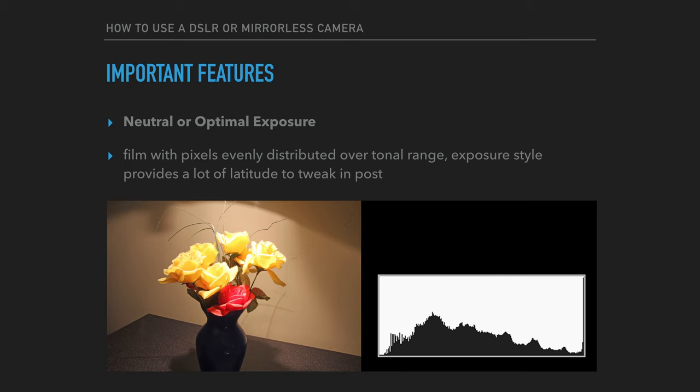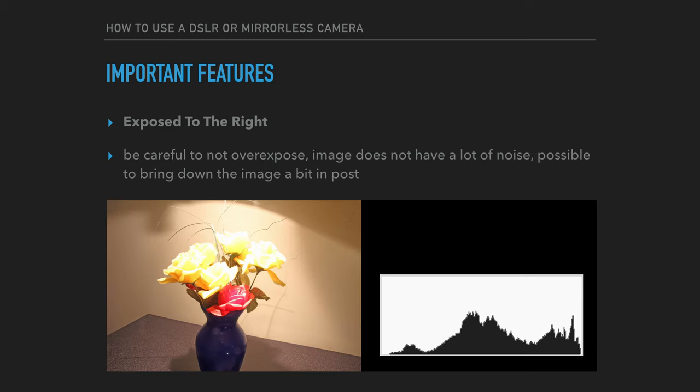Neutral or optimal exposure is achieved when pixels are evenly distributed throughout the total range. From this point, you can adjust the image up or down in brightness according to what level would make the image most cinematic. Though this exposure style may sometimes result in an image that seems a bit too dark or too bright, it provides a lot of latitude to tweak in post.